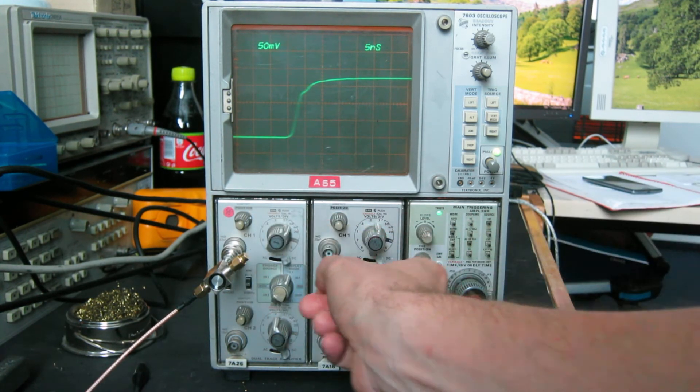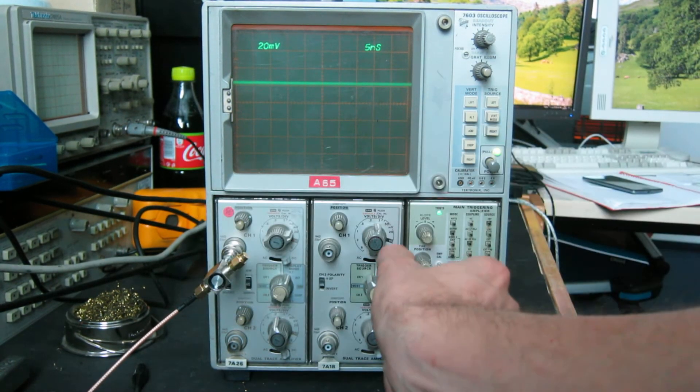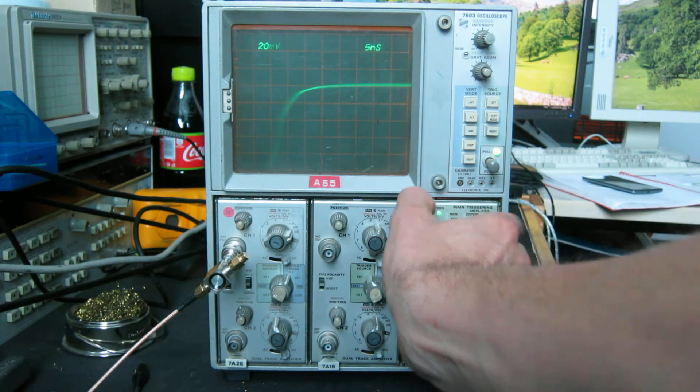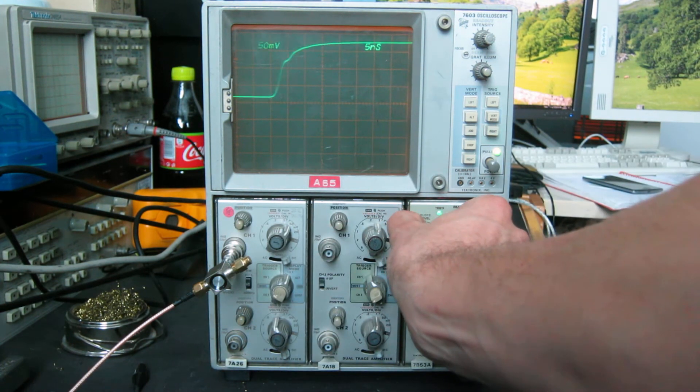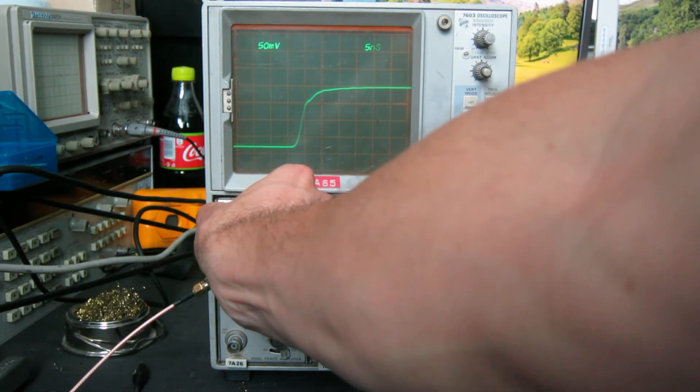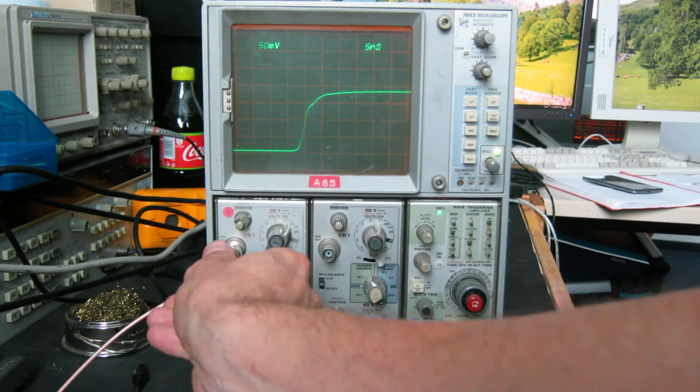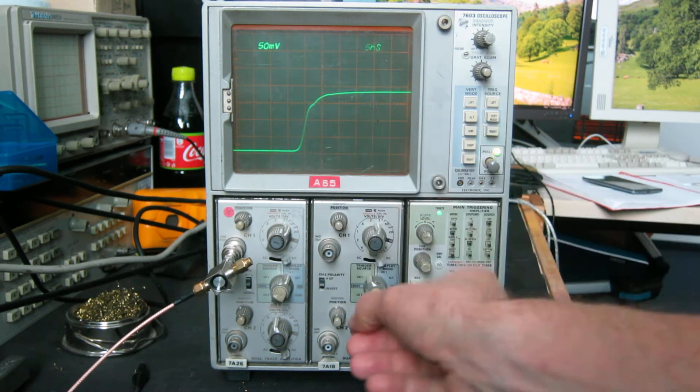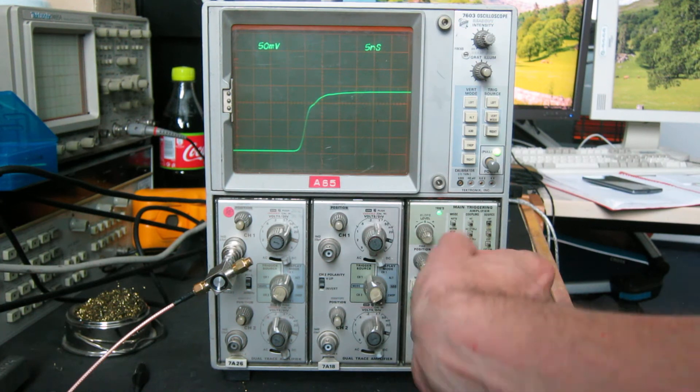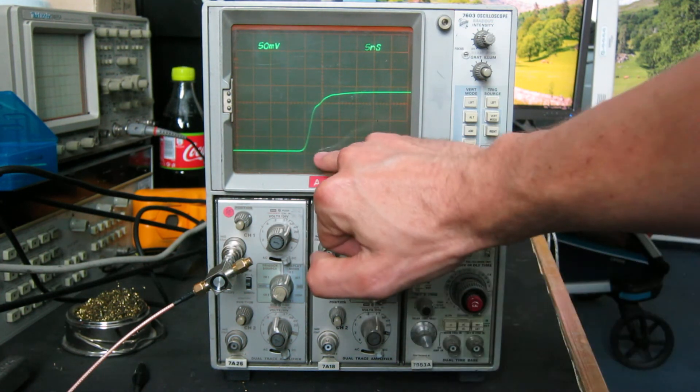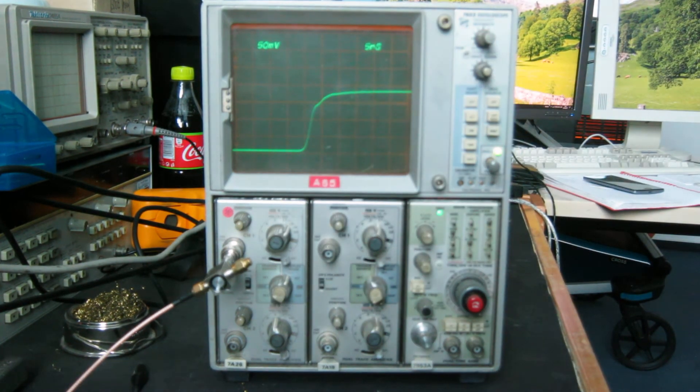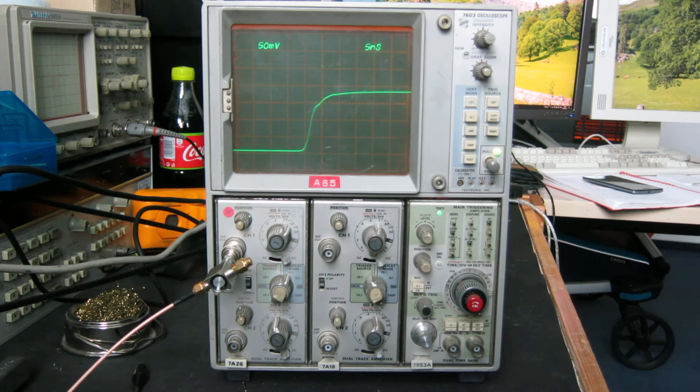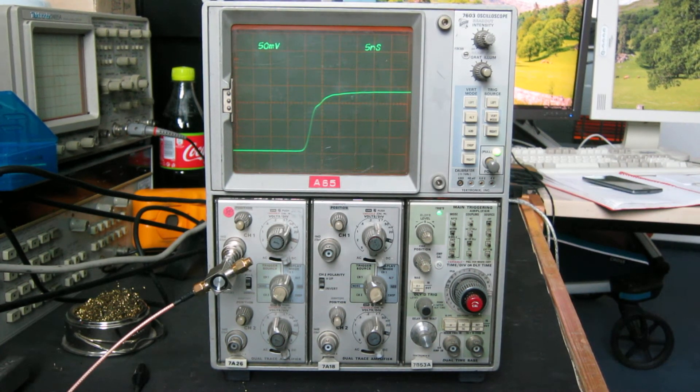But if I just expand that a bit and get it on the screen, just to give you an idea, we've got all the connectors. We've got a rise time here of not very much. Let's just move it across a bit. So the scruffy bit there is because of the cabling. But that rise time is looking at about 2.5-3 nanoseconds, which is a bandwidth of about 115 megahertz, which is pretty healthy for a 100 megahertz scope.